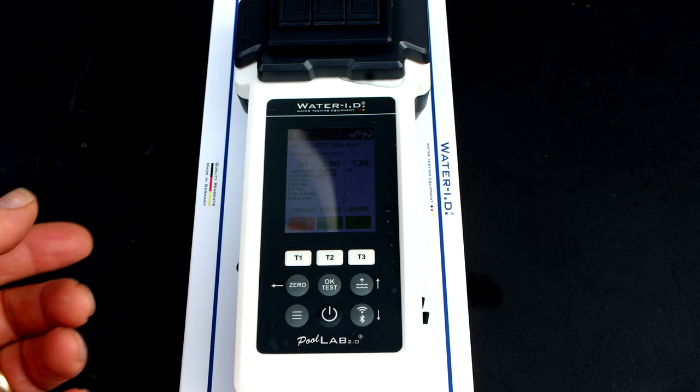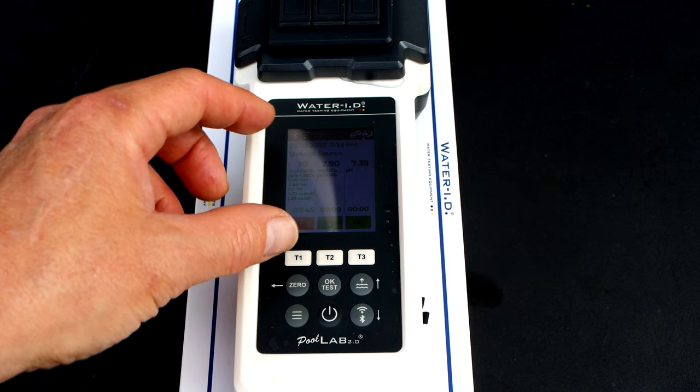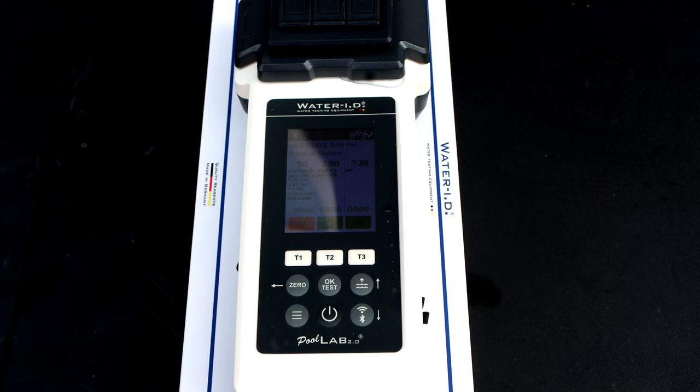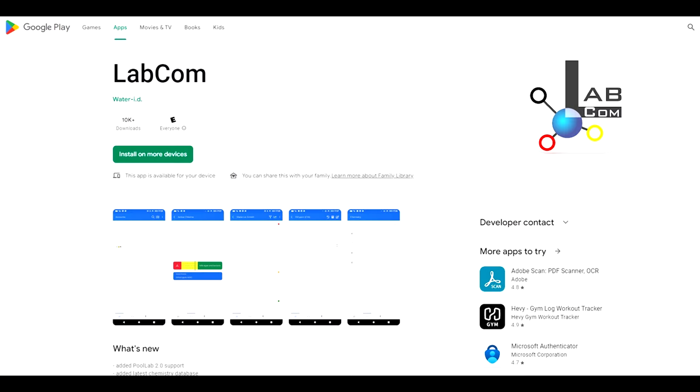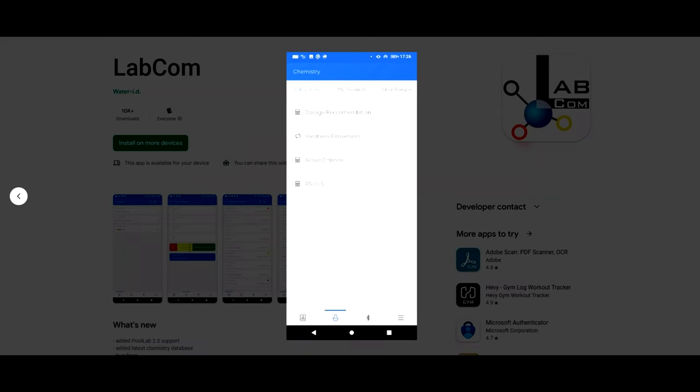The Pool Lab 2.0 or Water Tester in the US market has this really nice 2.4 inch color LED display. The Pool Lab 2.0 or Water Tester is engineered in Germany. You can also send the results through the cloud through the LabCom app on your mobile device or tablet. It's a great way to store the readings and the LabCom app will also give you recommendations.